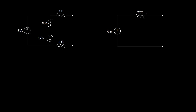The way in which these two circuits are equivalent is that any external circuit attached to the two terminals on the right will experience the same currents and voltages throughout that circuit, regardless of whether it's attached to the original circuit or its Thevenin equivalent, provided that we've chosen the proper voltage value for the Thevenin voltage and the proper resistance value for the Thevenin resistance.